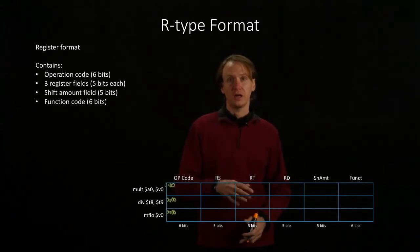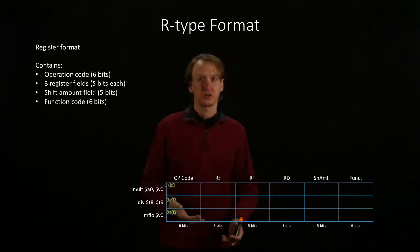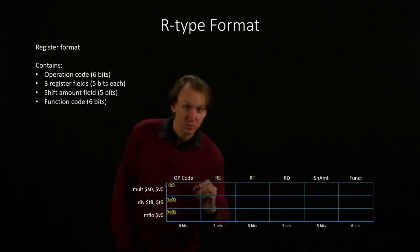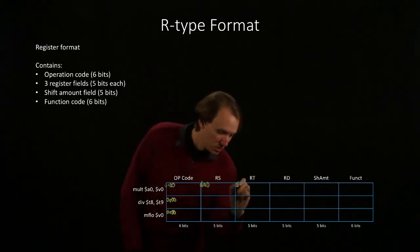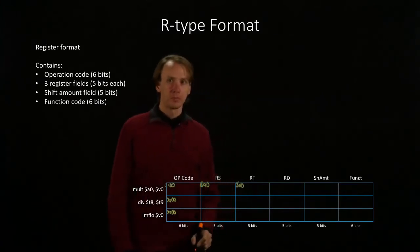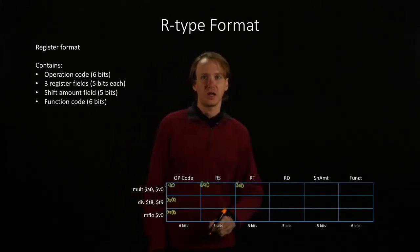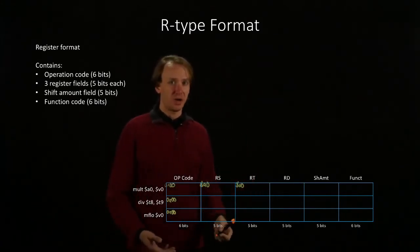So I'm going to go ahead and add in the source and destination registers. For our multiply, we have a0 times v0. Our divide instruction has $t8 divided by $t9.